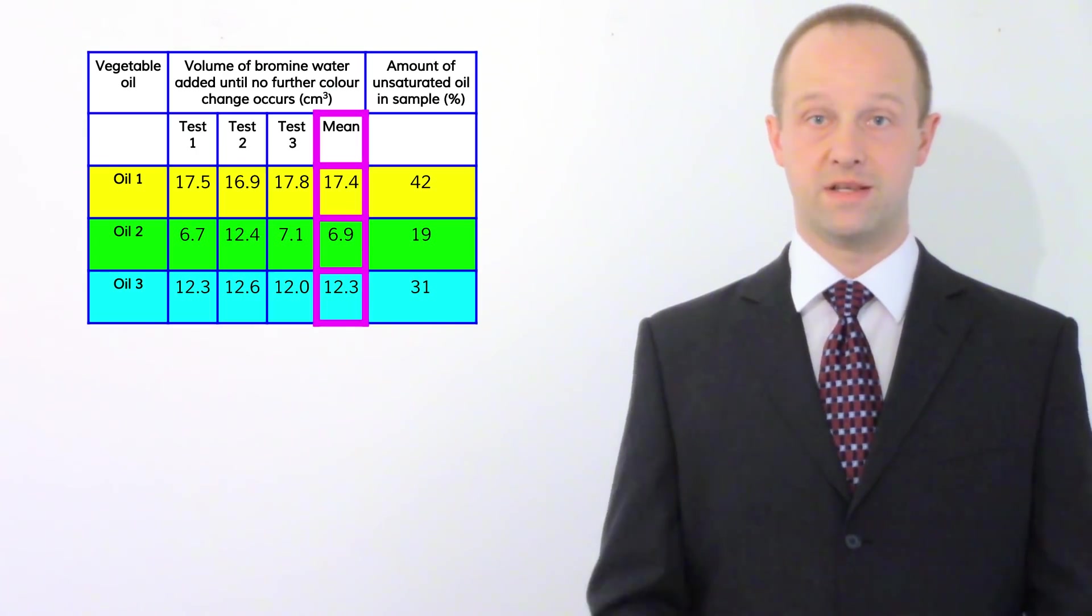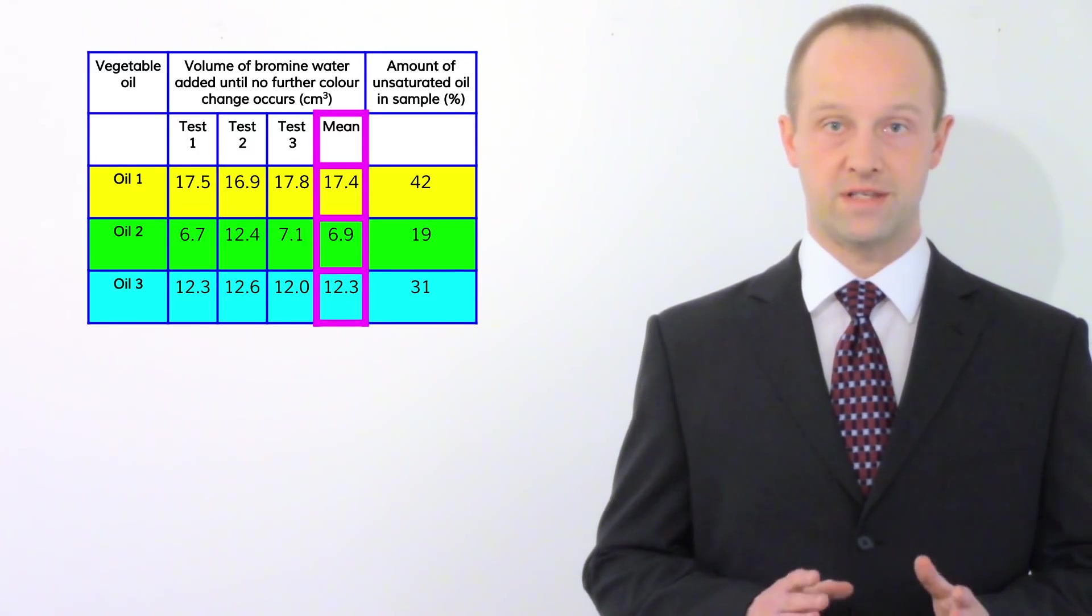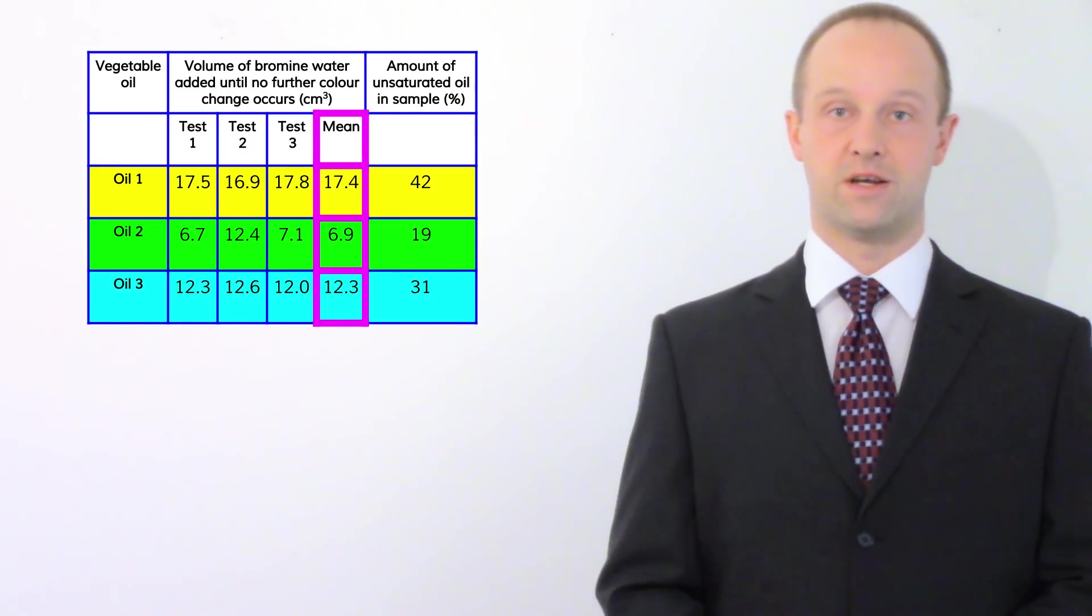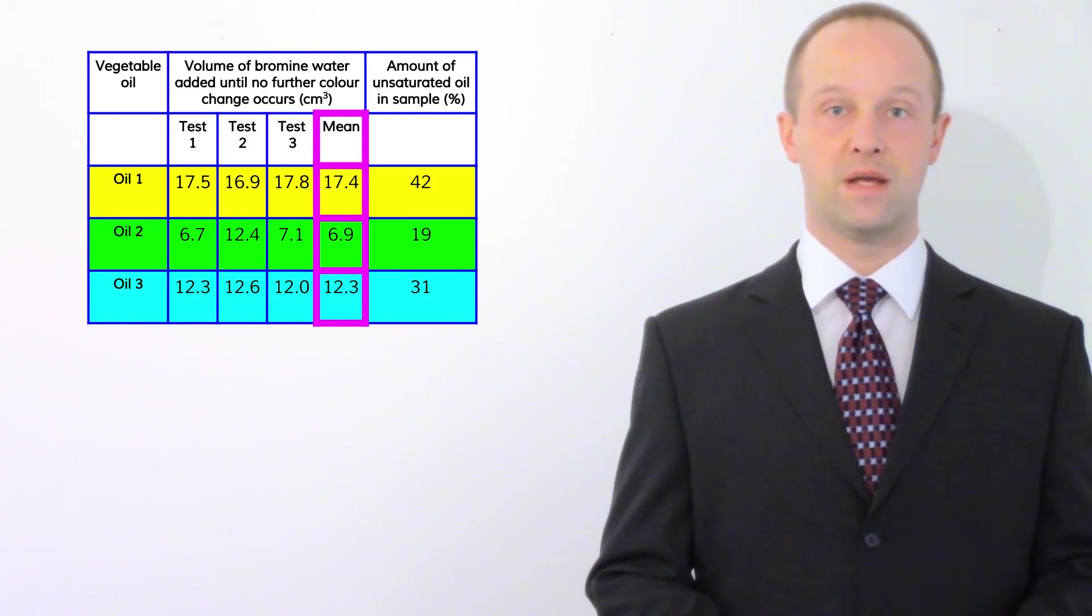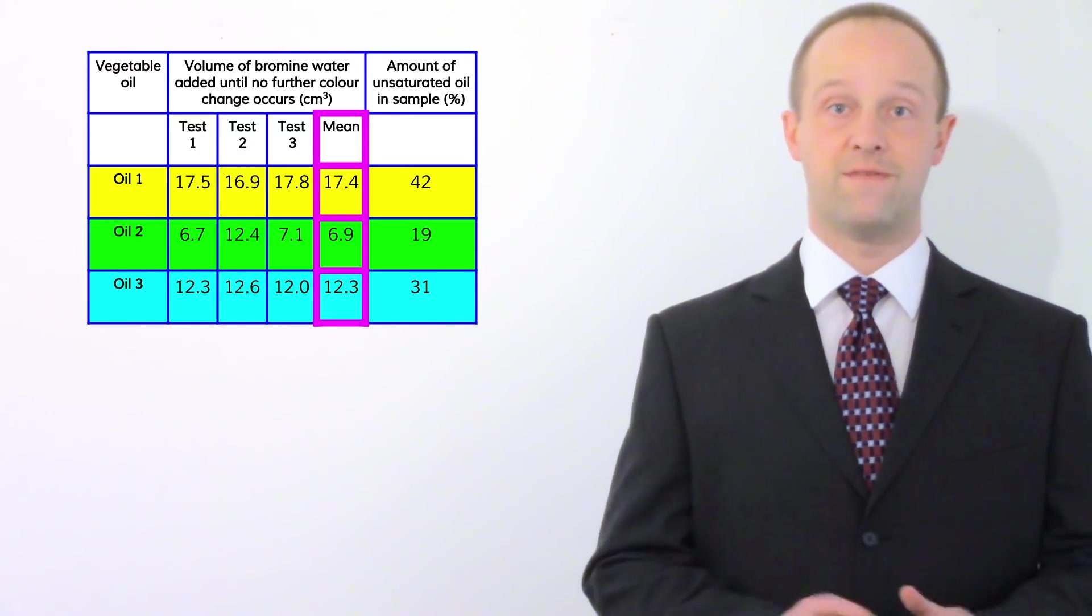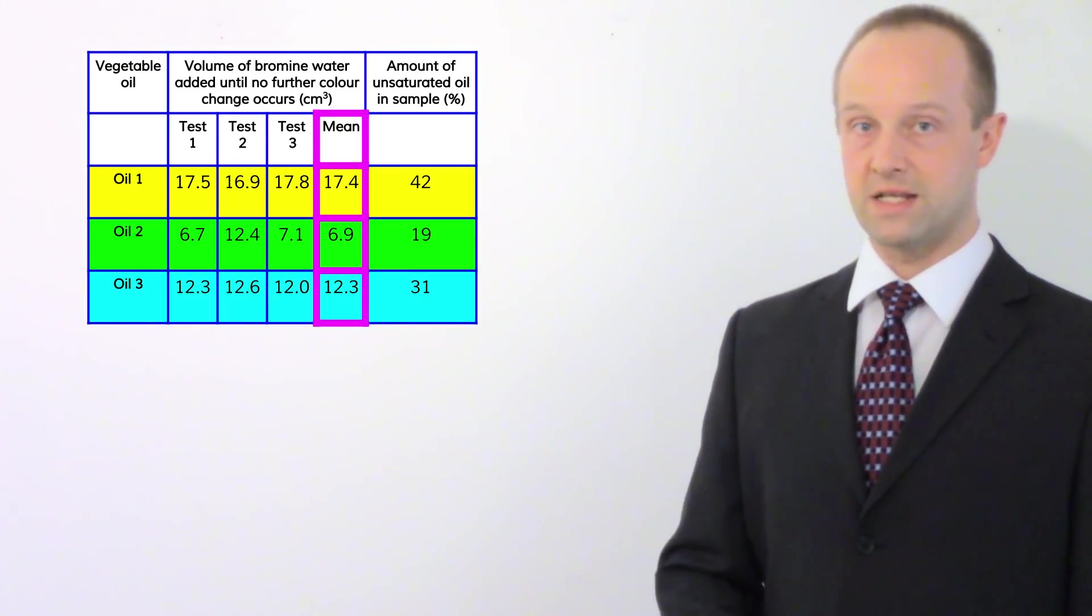On the exam paper this table is based on, the first thing that they asked you to do in the question was to find the anomalous result. They said there is an anomalous result somewhere in that table and you need to circle it. Again an awful lot of people didn't even notice this was part of the question.